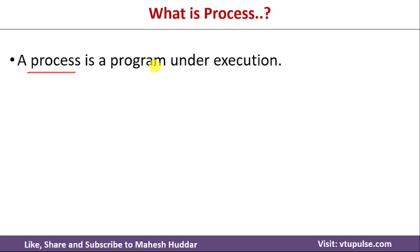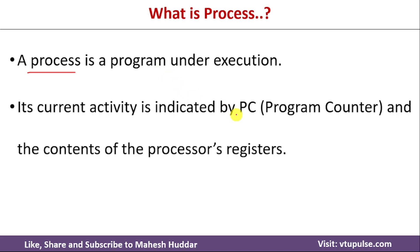A program contains a set of instructions, and each of those instructions is to be executed one after the other. Which particular instruction is to be executed next is stored in something called the program counter. The program counter is a processor register, and based on its content, the program will be executed sequentially.